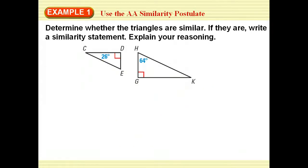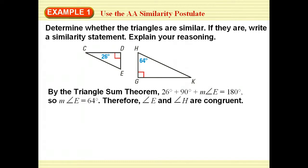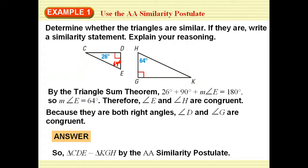To determine whether the triangles are similar here, I need to match up the corresponding angles. I already know that angle D and G are 90 degrees and they're congruent. So I'm going to need to find one of these others. By the triangle sum theorem, I can say 26 plus 90 plus angle E is 180. When I solve that, I see that angle E is actually 64 degrees. So now I have a 90 degree angle and a 64 degree angle, so by the angle similarity postulate, I have the two triangles similar.